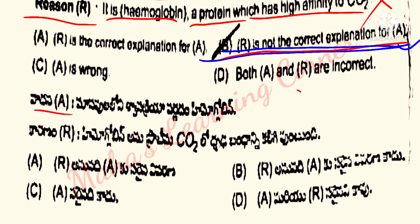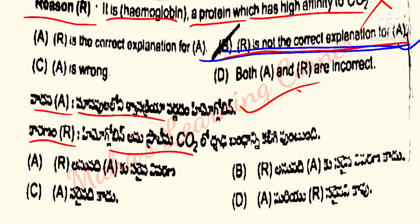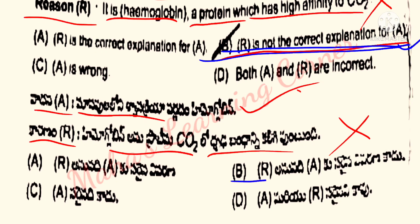Assertion A: Mahnuvel lo ni svaasakriya varna tham hemoglobin correct. Karana R: Hemoglobin ane protein CO2 to droda bandha ni kaliyo untaundi — wrong. Correct answer: R anu na di yeku sarayi na vyevarana kadu. Option B is the correct answer.